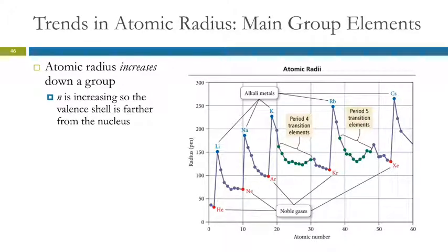It makes sense that they get bigger, because cesium has a lot more protons, neutrons, and electrons than lithium does. So it makes sense that it's larger.